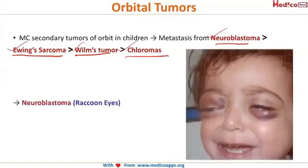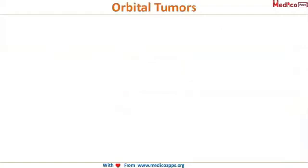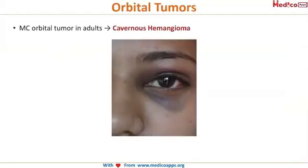This typical appearance is frequently asked in exam questions. The raccoon eye appearance is seen in neuroblastoma. Look at the eyes of this child — you can see the discoloration around the eyes, which is very similar to the eyes of a raccoon. This is called the raccoon eye sign, as seen in neuroblastoma.